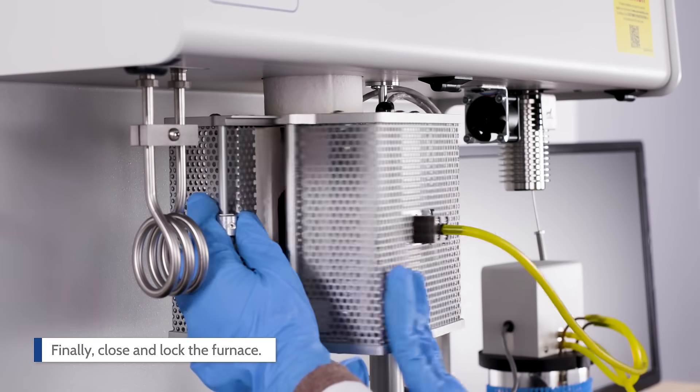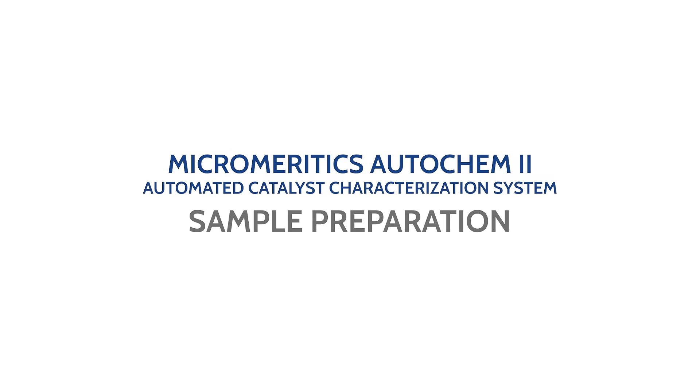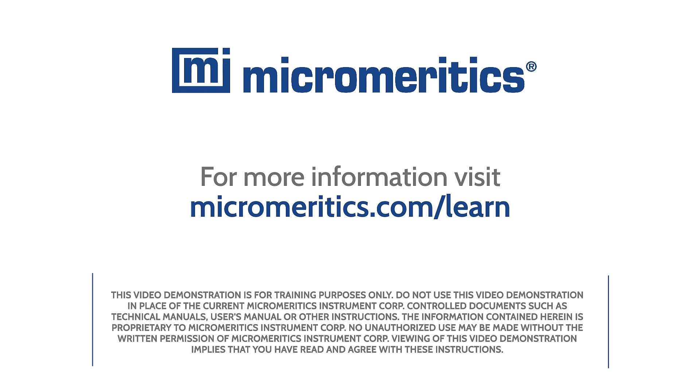Finally, close and lock the furnace. Now the sample is ready for analysis. And that completes this demonstration on how to prepare a sample on the Micromeritics AutoChem II Automated Catalyst Characterization System. For more information, visit micromeritics.com/learn.